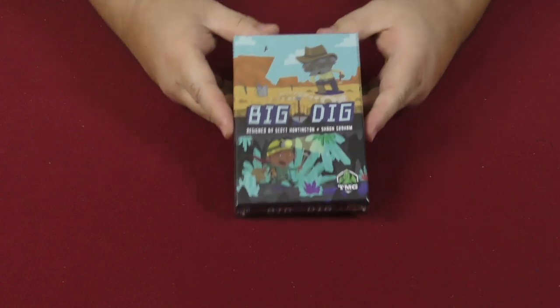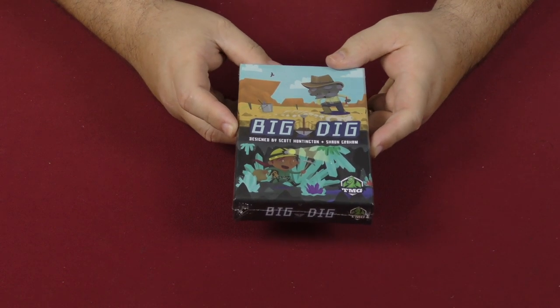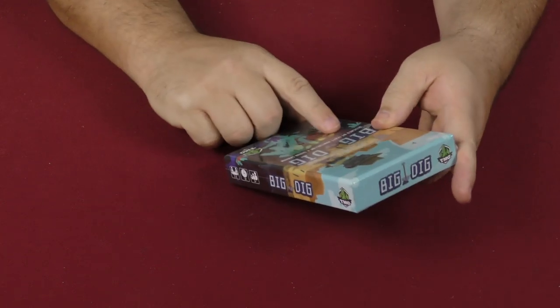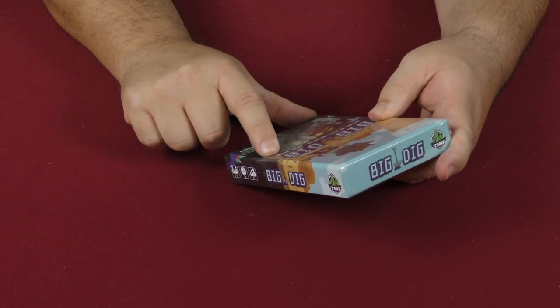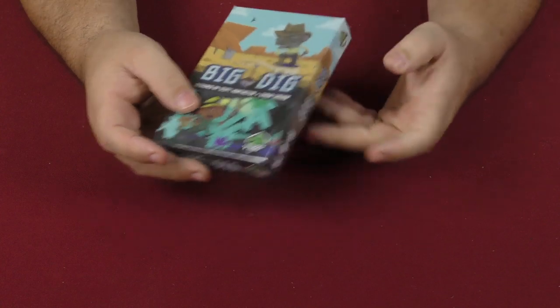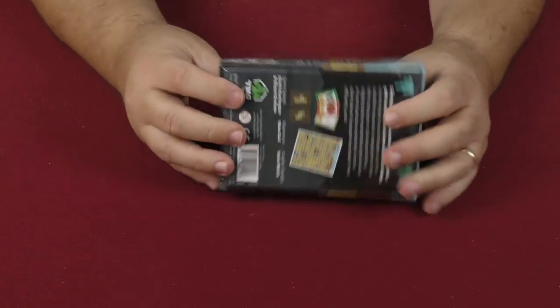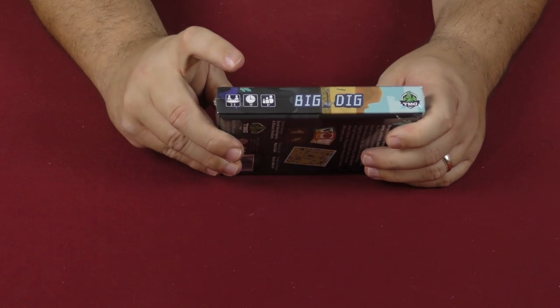Hey folks, welcome back to another daily unboxing with yours truly, Sam Healy. Today we're going to take a look at Big Dig: Diggy Diggy Hole, designed by Scott Huntington and Sean Graham and published by Tasty Minstrel Games. It's for two to four players, takes 10 minutes, and is for ages eight and up.